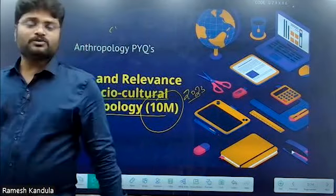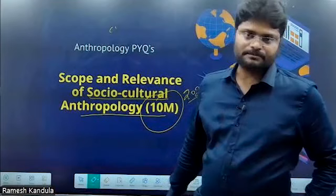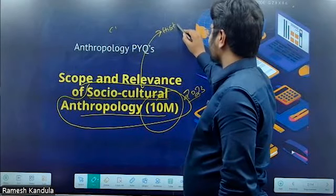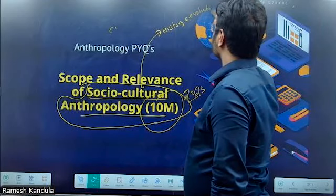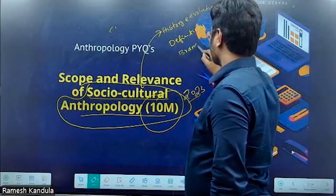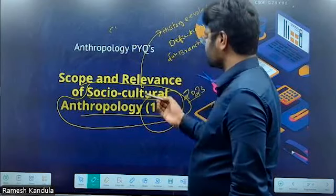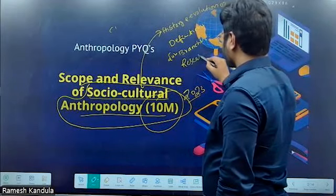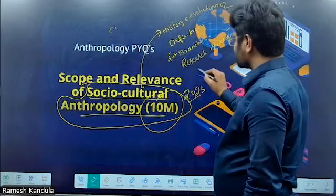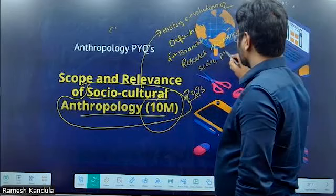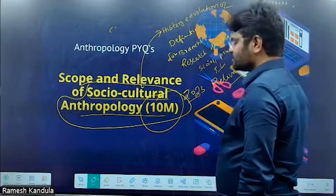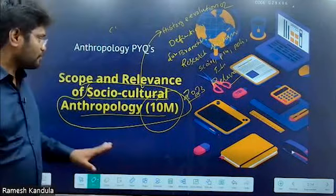Before attempting any question, there are a lot of dimensions for each concept. If you take socio-cultural anthropology, it has various dimensions: you can see the history and evolution of this branch, definitions and various sub-branches within this branch, research strategy, and relationship of socio-cultural anthropology with respect to other subjects such as sociology, psychology, political science, history, economics, and finally, relevance of this branch.